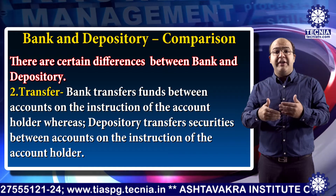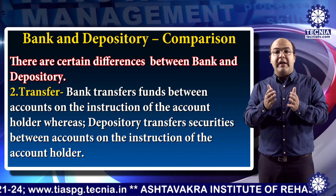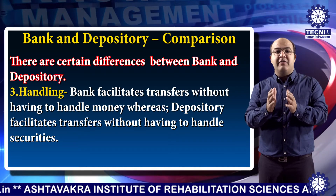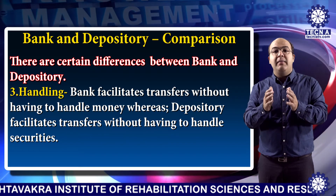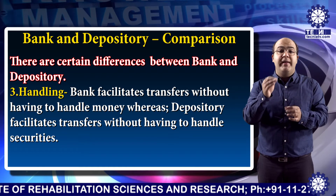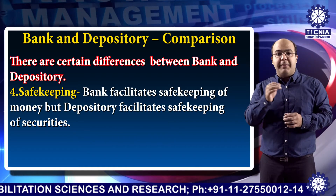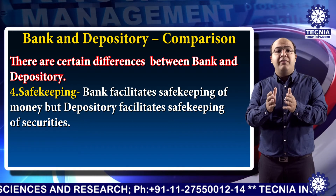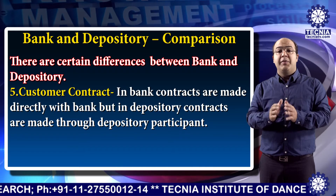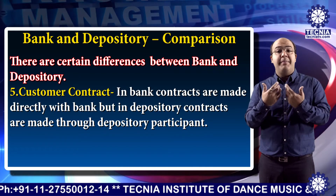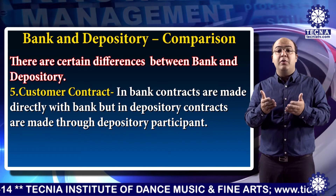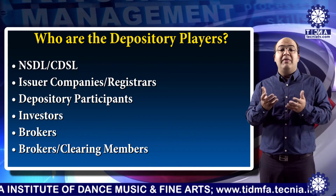Third, based on handling: a bank facilitates transfers without having to handle money, whereas a depository facilitates transfers without having to handle securities. Fourth, based on safekeeping: a bank facilitates safekeeping of money, but a depository facilitates safekeeping of securities. Fifth, based on customer contract: contracts in a bank are made directly with the bank, but in a depository, contracts are made through a depository participant.